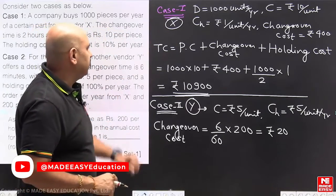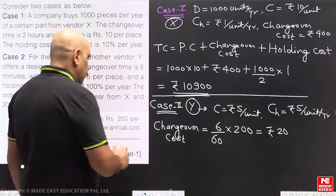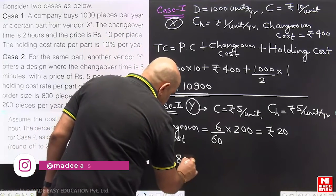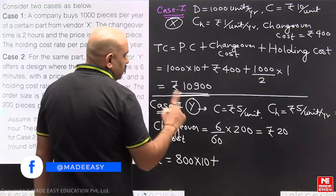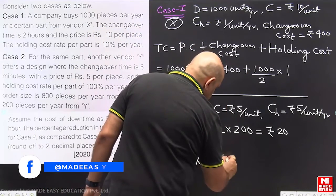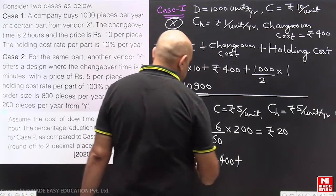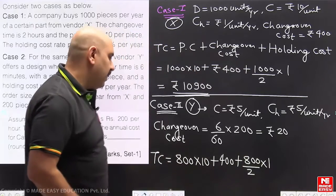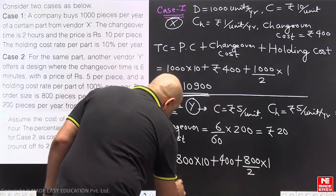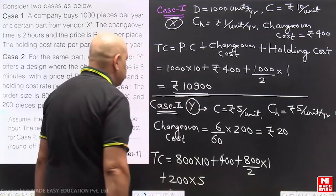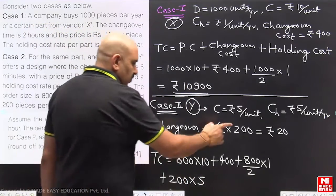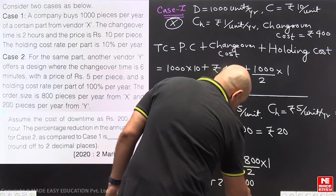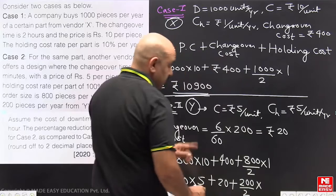Now in the second case, 800 units we are purchasing from X and 200 units from Y. The total cost will be: first for X, 800 purchasing cost at Rs. 10 per unit, changeover cost will be the same 400, plus holding cost will be 800 by 2 into 1. And this is the cost for X plus Y. See, 200 units we are purchasing from Y into Rs. 5 purchasing cost. The changeover cost will be Rs. 20 and the holding cost will be 200 by 2 into holding rate is Rs. 5.